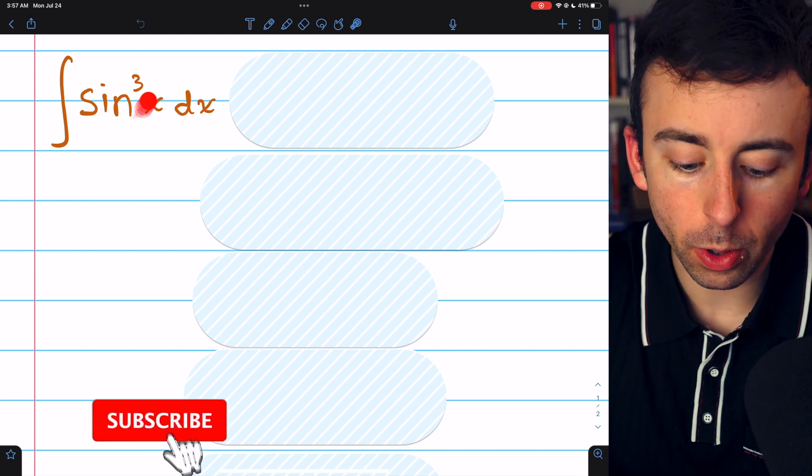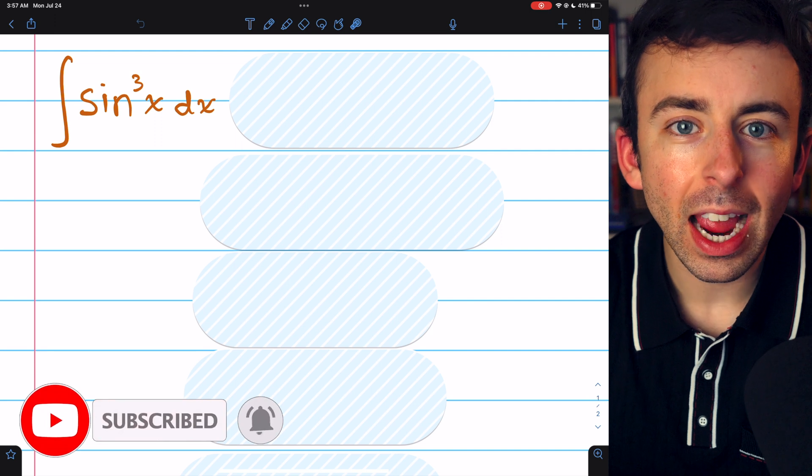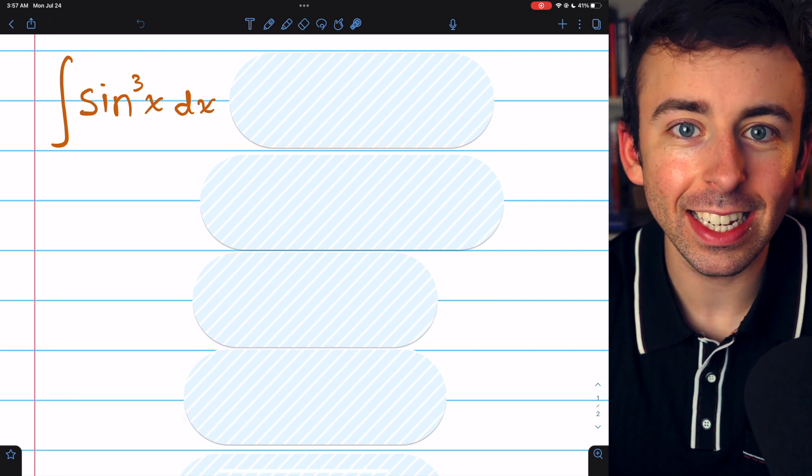To integrate an odd power of sine, we want to take one sine out and then replace the rest using the Pythagorean identity.